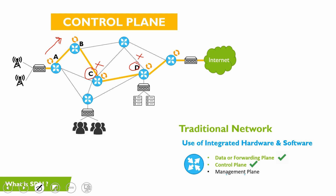Traffic goes via router B, then C, then ultimately reaches D. If there is a problem with router D, router A will never know and will keep sending traffic in the same direction, never routing it to a better path. There has to be someone keeping an end-to-end eye on the complete network and making holistic decisions — that is the power of SDN, where we bring this resilience into the network.